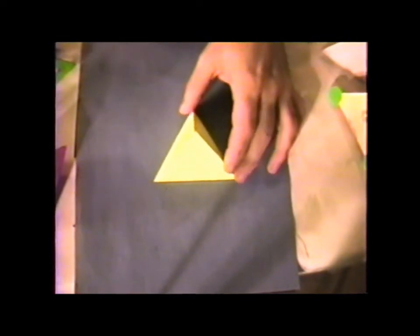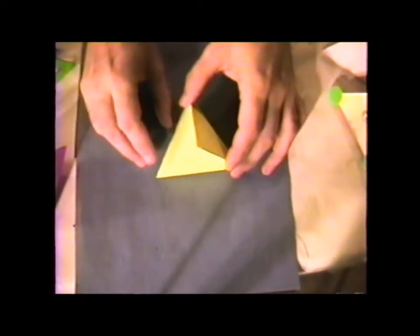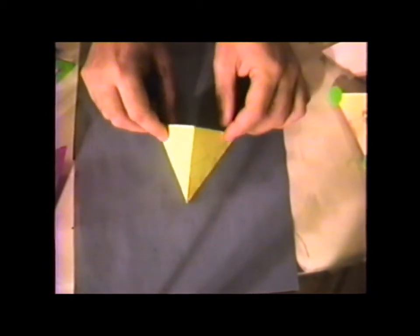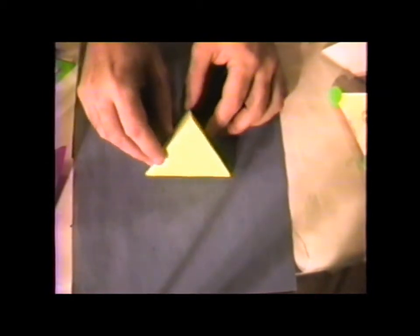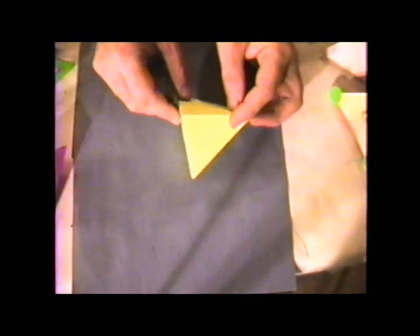This figure here is the tetrahedron. Tetra means four, hedron means faces. So it's a figure that has four trigonal faces.